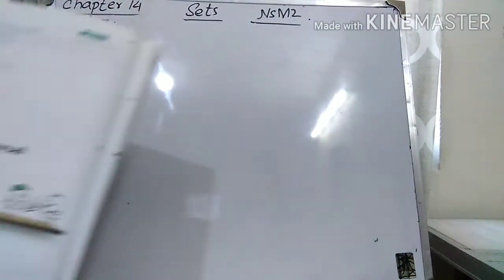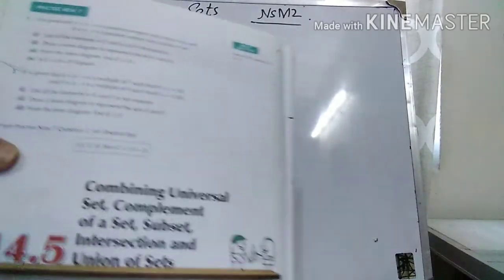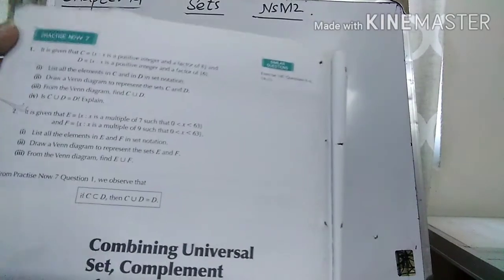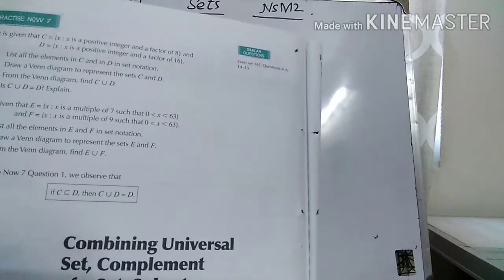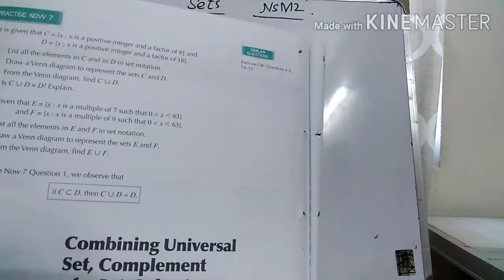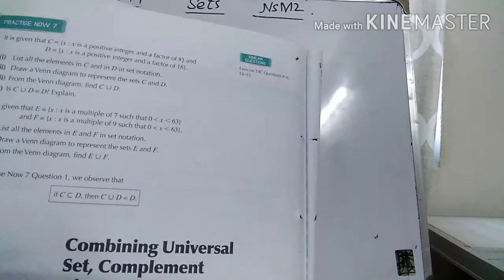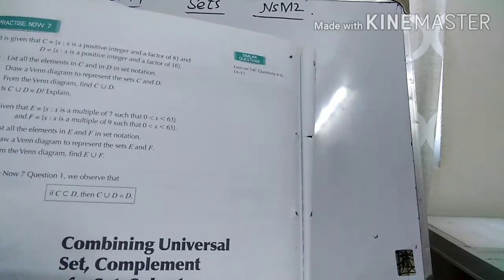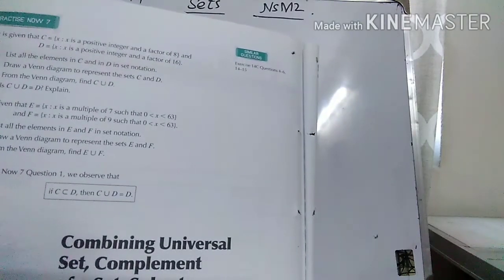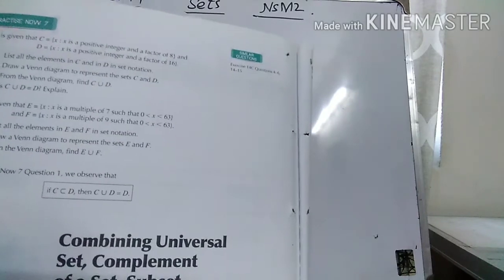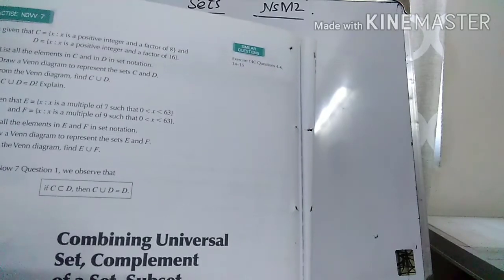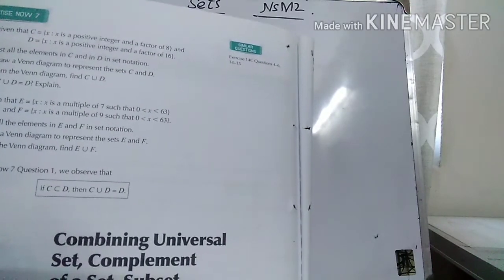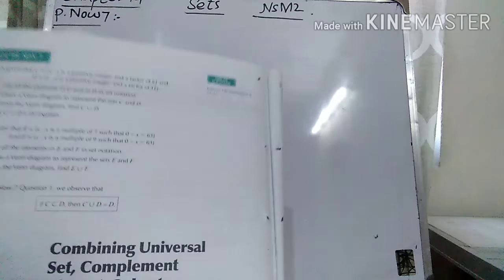Here you can see the question. Your books must be open in front of you. It is given that C equals X, where X is a positive integer and a factor of 8. And D equals X, where X is a positive integer and a factor of 16. In part 1, list all the elements in C and D in set notation. Part 2, draw a Venn diagram to present sets C and D. Part 3, from the Venn diagram find C union D. Part 4, is C union D equal to D? Explain.